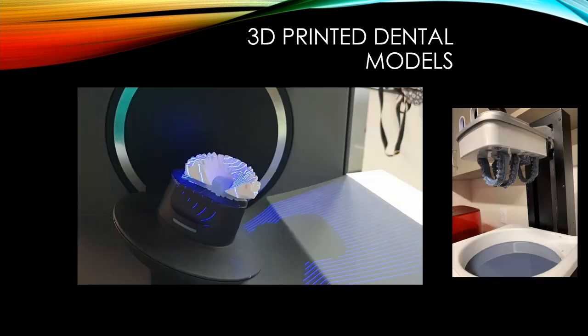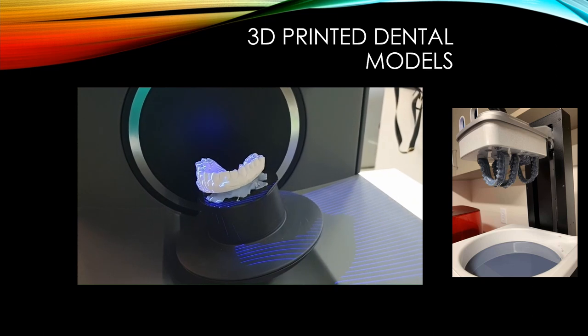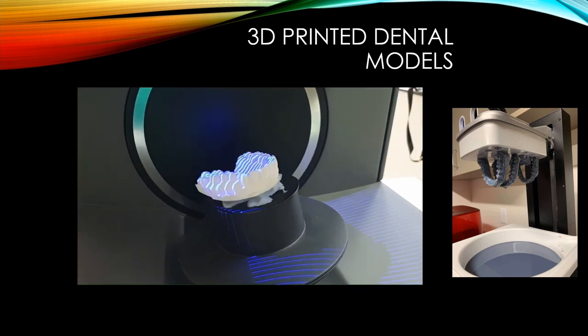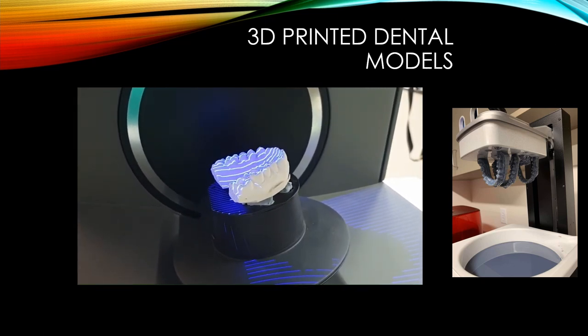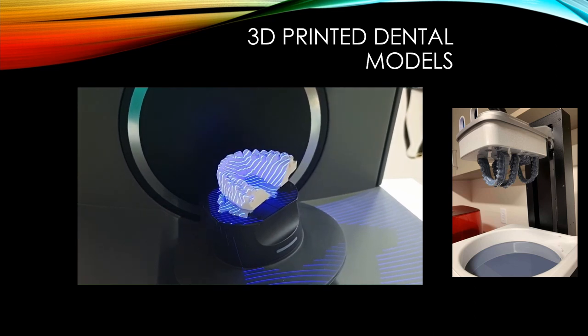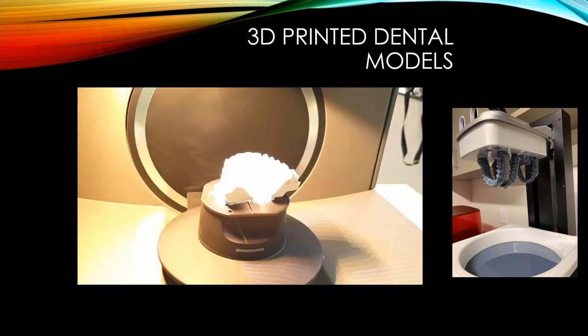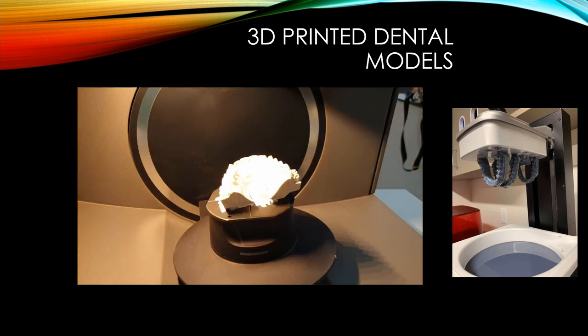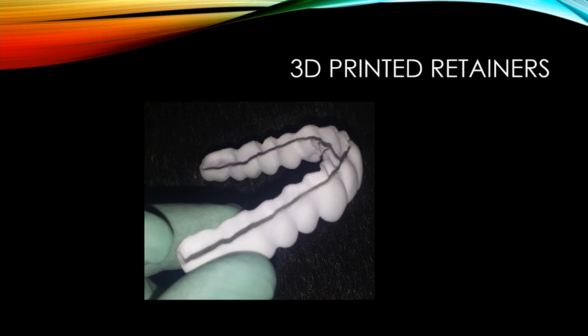For example, this appliance was designed on CAD software, then 3D printed, with a screw welded to the 3D printed part, and then transferred and cemented intraorally. Now let's discuss how 3D printing is used in orthodontics and its applications. The first use is printing dental models — either from an intraoral scanner or a desktop scanner — saving the model digitally and 3D printing it physically whenever needed.